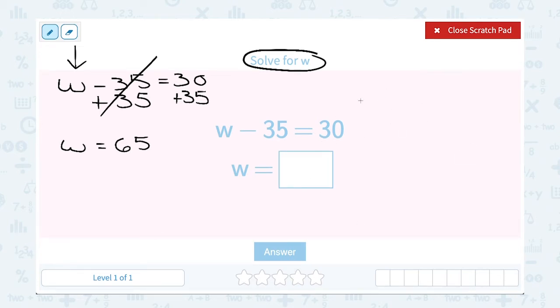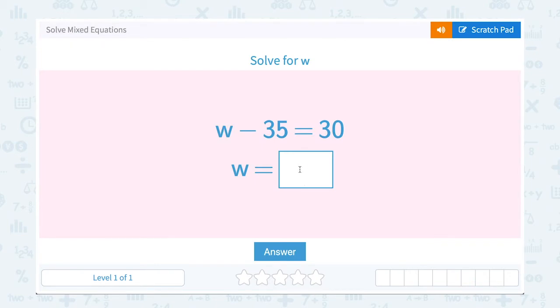If you want to double check your work, what you can do is try substituting the answer you got in place of W and making sure it works out to give you a true statement. If W is supposed to equal 65, I should be able to say 65 minus 35 equals 30. Well, if you subtract 65 minus 35, that does give you 30. So I wind up with a true statement, 30 equals 30. And that means that my solution is correct. Our solution was W equals 65.